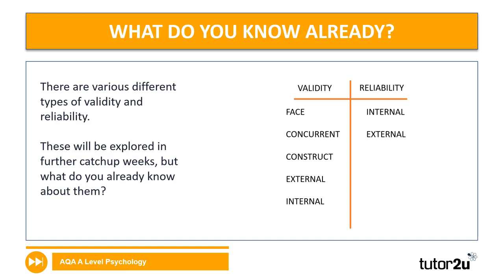In terms of validity and reliability, there are different types, and these are terms you've come across in your studies. When we think about validity, we can think about face validity, concurrent validity, construct validity, and external and internal validity. When we think about reliability, we've got internal and external. We'll be exploring these in later sessions as well.